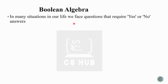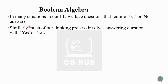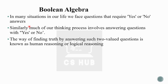In many situations in our life, we face questions that require yes or no answers. Much of our thinking process involves answering questions with yes or no. The way of finding truth by answering such two-valued questions is known as human reasoning or logical reasoning.